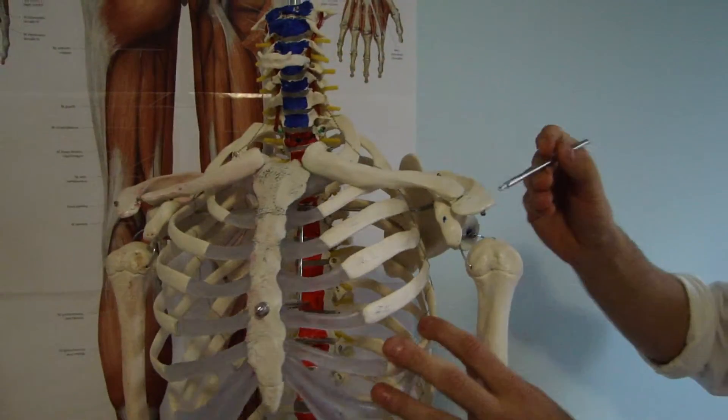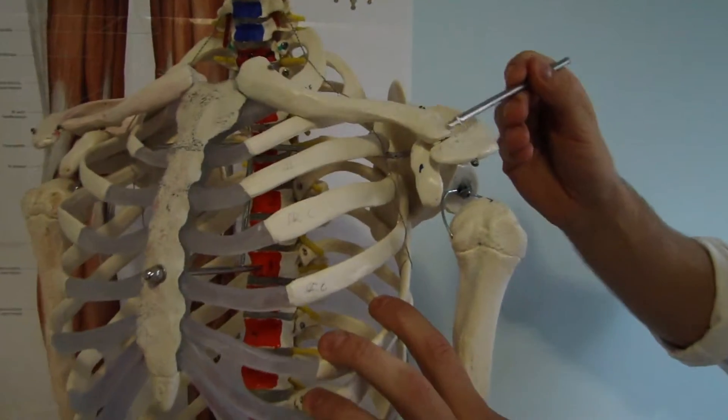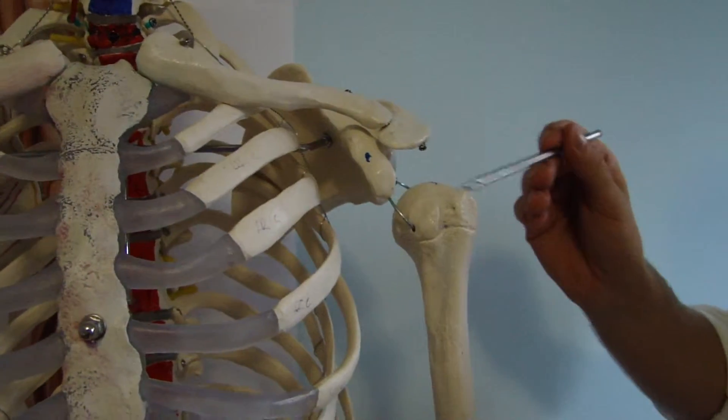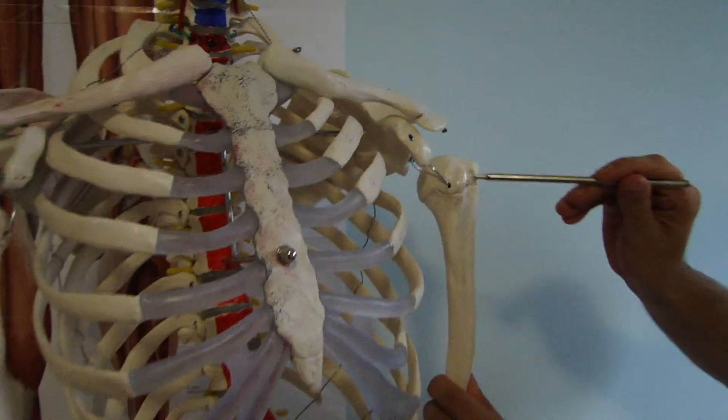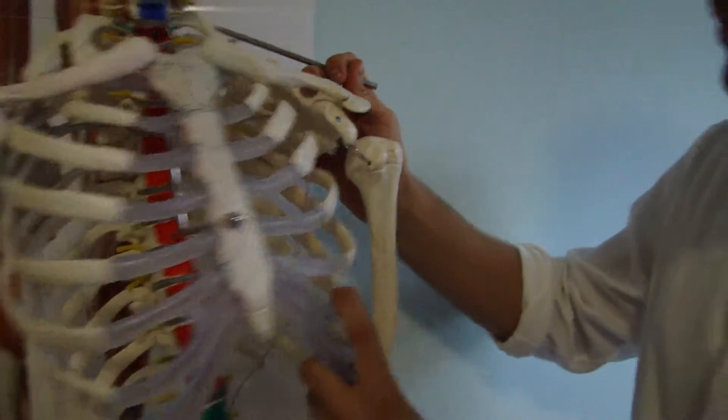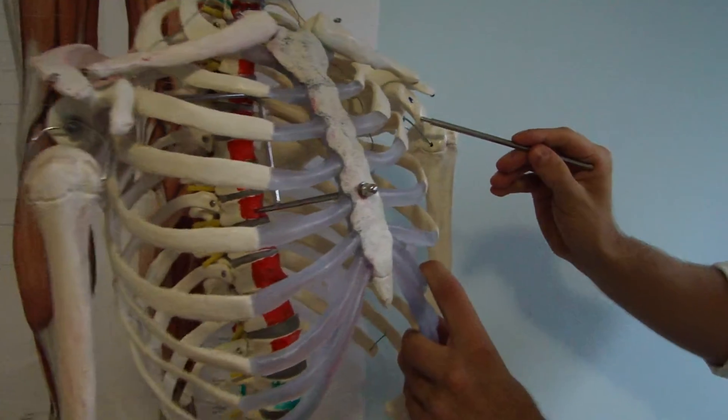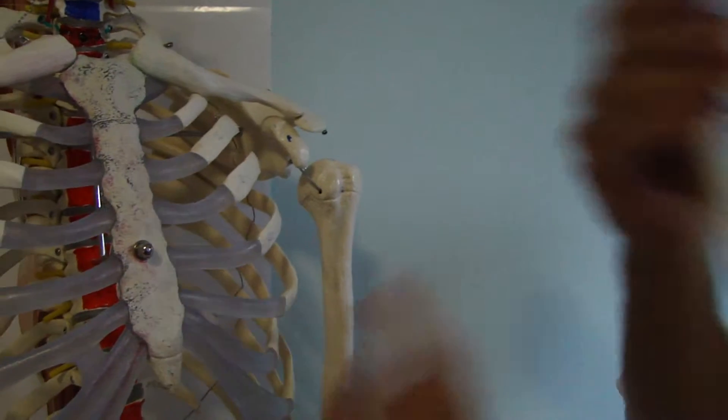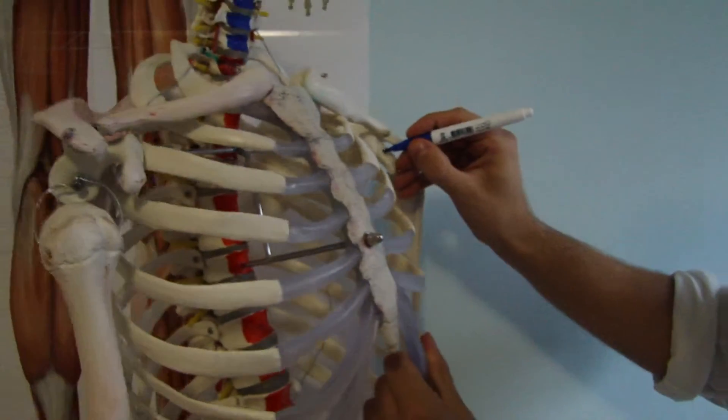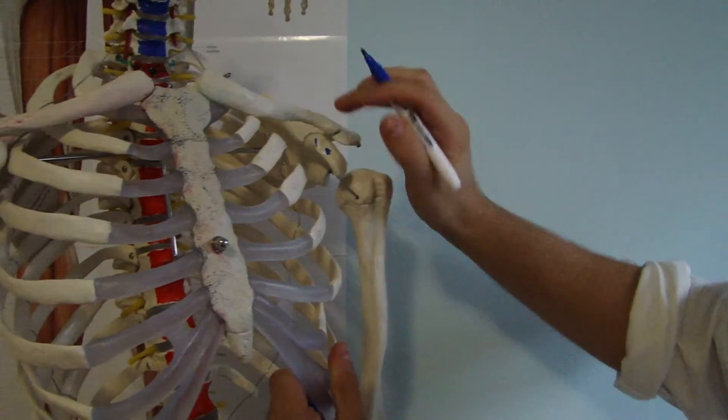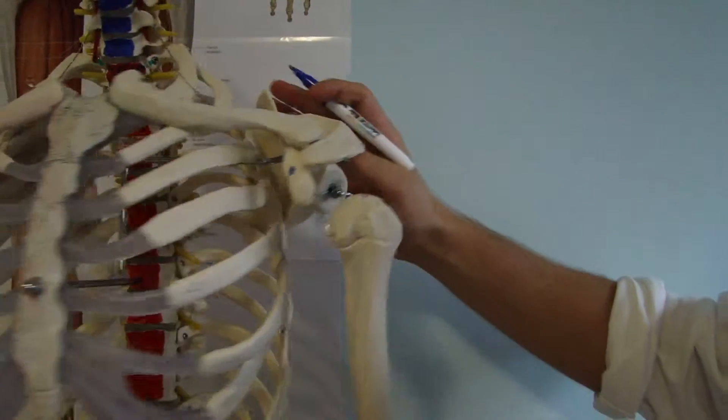Here we have acromioclavicular ligament and here on the head we have capsular ligament. Here there is transverse ligament of humerus. Then here we have coracoacromial ligament. I want to show you here, this is basically trapezoid and conoid portion of coracoclavicular ligament as well.